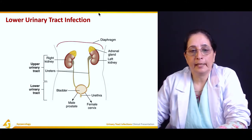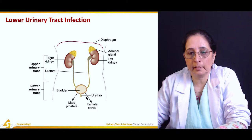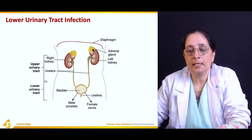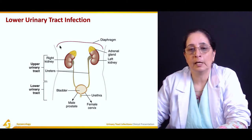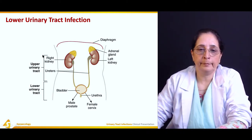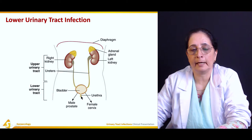This diagram shows the urinary tract as a whole, giving an idea of the lower and upper urinary tracts. The urethra and bladder make up the lower urinary tract. The ureters and kidneys form the upper urinary tract. On top of the kidneys are the adrenal glands. The diaphragm, the major muscle of respiration, separates the abdomen from the chest.